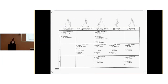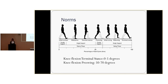In mid-stance, the knee and hips should be pretty much neutral, as well as the ankle. Going into terminal stance, the hip should be extended, the knee is going to be close to neutral, and then your ankle is going to start going into plantar flexion. Two key points: knee flexion in terminal stance should be somewhere between zero and five degrees, and knee flexion in pre-swing should be somewhere between 50 and 70 degrees.